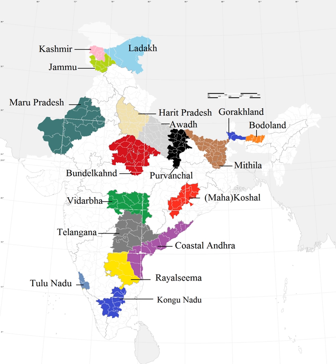Marathwada is one of the five regions in the Indian state of Maharashtra, coinciding with the Aurangabad division. Marathwada came under the rule of the Nizam of Hyderabad, which later became the princely state of Hyderabad under the suzerainty of British India. Subsequently, through Operation Polo — a police action on 17 September 1948 — the Indian army annexed Hyderabad to India, and on 1 November 1956, Marathwada was transferred from Hyderabad state to Bombay state. On 1 May 1960, Bombay state was divided into Maharashtra and Gujarat states, with Marathwada becoming part of the former.